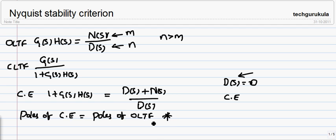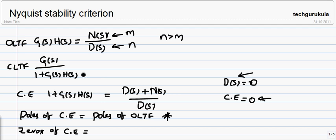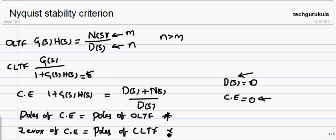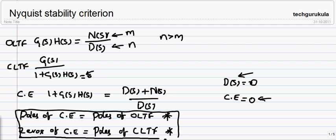This is a very important statement. If you look at the zeros of 1 plus G(s)H(s), we find those by equating the characteristic equation to zero. The roots we obtain are the zeros of the characteristic equation, which are also the poles of the closed loop transfer function. When 1 plus G(s)H(s) equals zero, the roots you get for that expression will be the poles of the closed loop transfer function. These two statements are very important and we are going to revisit them while proving the Nyquist stability criterion.